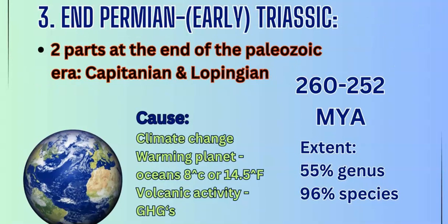Our third mass extinction was a big one — a nearly complete eradication of species on the planet. This was the end-Permian and early Triassic extinction event, happening around 260 to 252 million years ago. A combination of atmospheric and oceanic conditions changed radically through volcanic activity and greenhouse gases, and the planet warmed considerably — oceans are estimated to have risen above 8 degrees Celsius above normal, or 14.5 degrees Fahrenheit. Compare that to today's estimated climate change of 1.5 to 2 degrees Fahrenheit, and this was a stark difference. It took out over half the genus and 96% of the species.